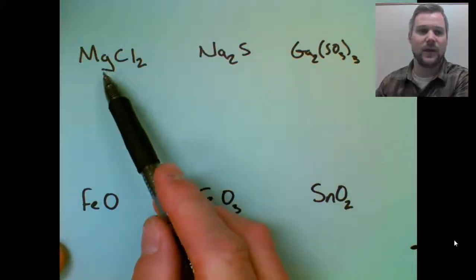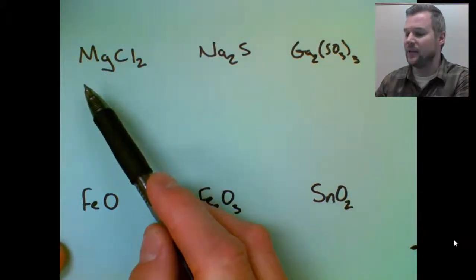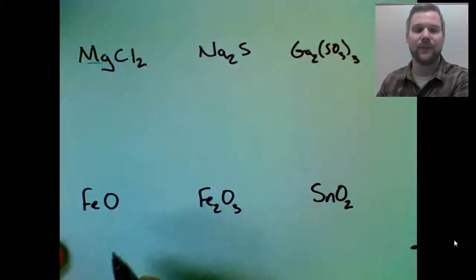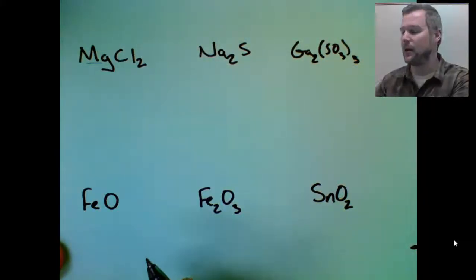So in this first formula, I see it doesn't start with H, so it makes it not an acid. There's not three or more atoms, so then that means I need to look at the first atom. It's a metal, so I know that this is an ionic compound.